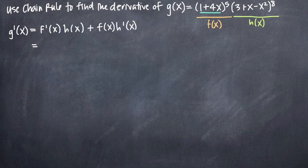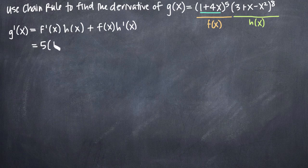So for example, taking the derivative of the outside function, we're going to use the power rule and bring the 5 out in front, as if this whole thing were just x to the 5th instead of 1 plus 4x to the 5th. If you ignore the inside function and pretend it's just x, you'd take the derivative of x to the 5th as 5x to the 4th using the power rule. We're going to do the same thing here — we'll get 5 times the quantity 1 plus 4x to the 4th. That's the derivative of the outside function, leaving the inside function completely untouched.